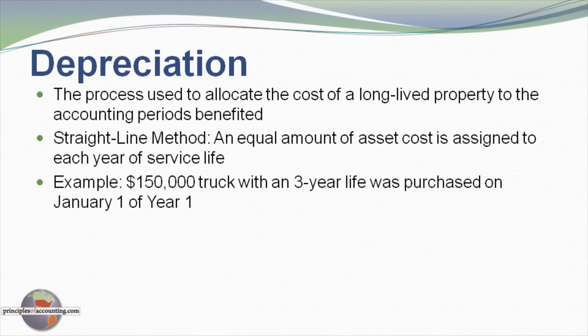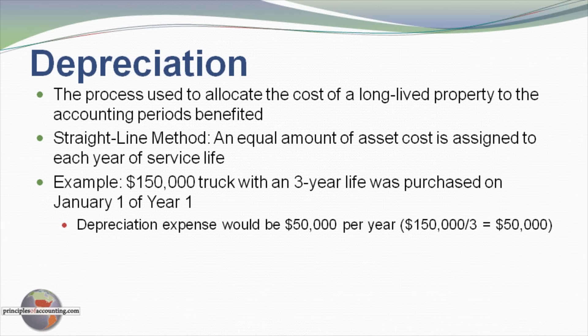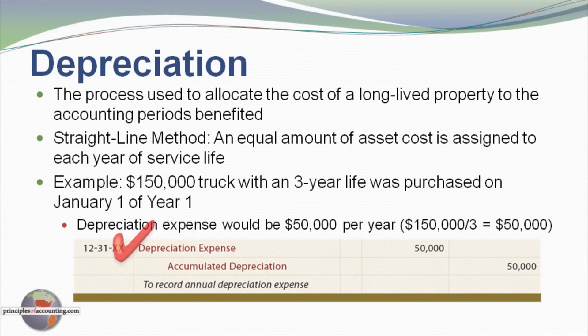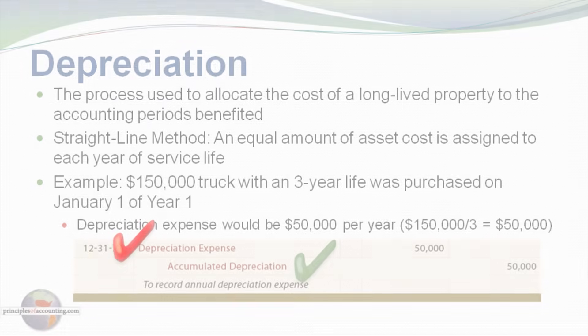For example, assume we purchase a truck for $150,000, and that truck has a three-year life with no salvage value — it will be completely worthless at the end of the three-year period. Under the straight-line method, we would record $50,000 of expense each year for the three-year period. Our adjusting journal entry each year would reflect a debit to depreciation expense and a credit to accumulated depreciation.